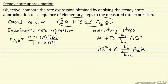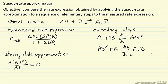The reactive intermediate is only present in low concentrations because it's very reactive, and so we'll use that to apply the steady state approximation. Because it's present in low concentration, the steady state approximation assumes it quickly builds up to a steady state concentration, and the derivative of that concentration with respect to time is equal to zero.